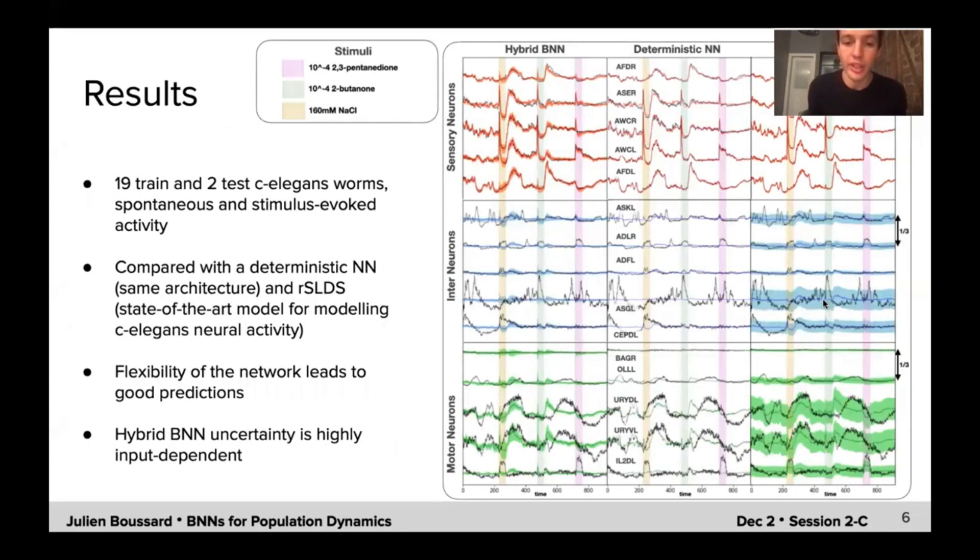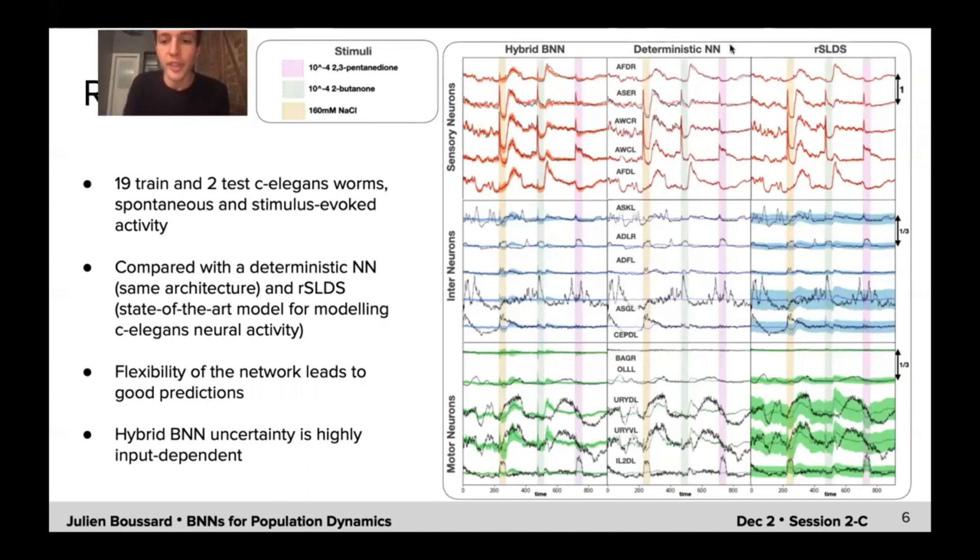So, what we did is, we tried to infer the neural activity of C elegans worms at time t+1 given activity and stimulus at time t. And here, we're showing the reconstructed traces in red, blue and green for three types of neurons, sensory, inter and motor neurons. And the true trace is in black. And we're showing it for our method, the hybrid BNN, the first column, then a deterministic neural net that has the exact same architecture as our method. And then, OSRDS, which is a state of the art method for modeling this type of neural trajectories. And so, what we see, if we look at our prediction, is that the flexibility of the network leads to a good prediction. And then, the uncertainty actually varies with stimulus and varies with input. So, the uncertainty associated to our posterior distribution is highly input dependent.